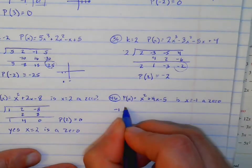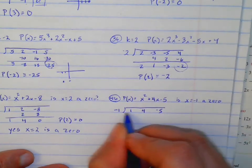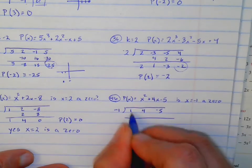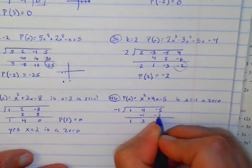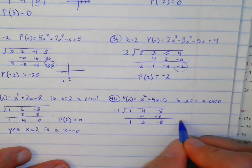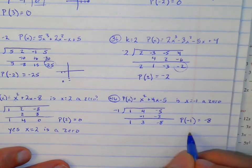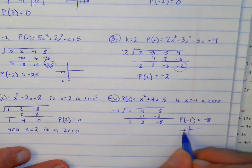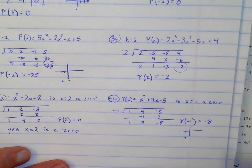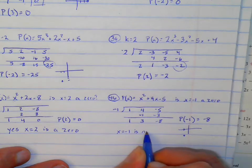Here we're going to divide out negative 1. We have 1x squared, 4x, minus 5. Bring down: 1, negative 1 — add, negative 3 — add. P of negative 1 equals negative 8. So at negative 1, is it a zero? Nope. At negative 1 the graph is down at negative 8, not going through at 0. So x equals negative 1 is not a zero.